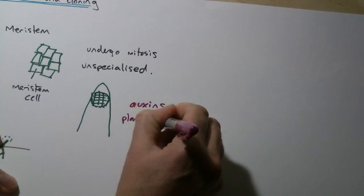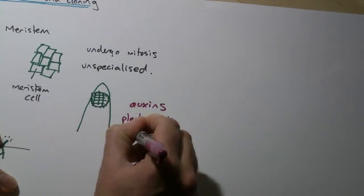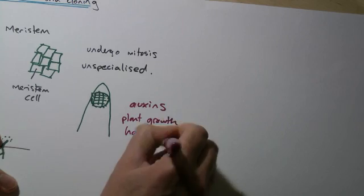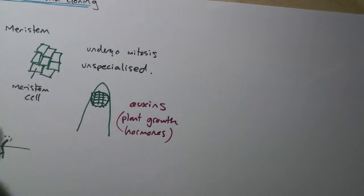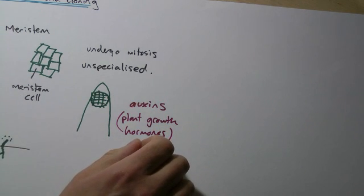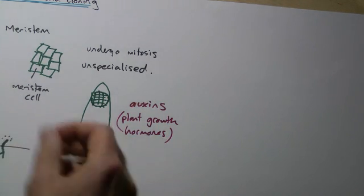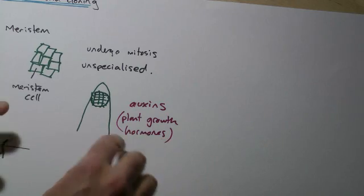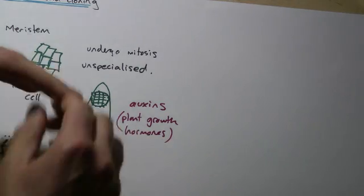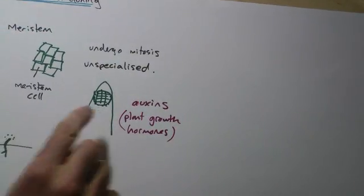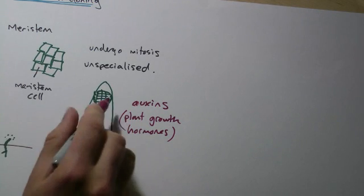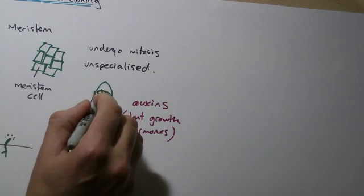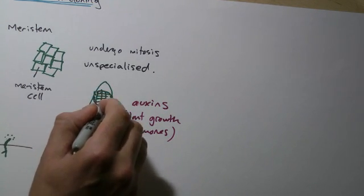Now you have growth hormones as well so at the moment you've got some growth hormones in your body which are still telling you to grow. So the reason you're still getting perhaps taller, so your bones are still growing, the skin, the tissue, is because you have chemicals, hormones in your body which tell cells to divide and keep growing.